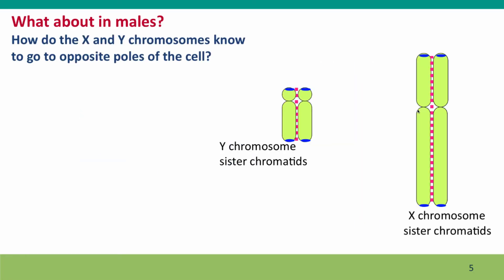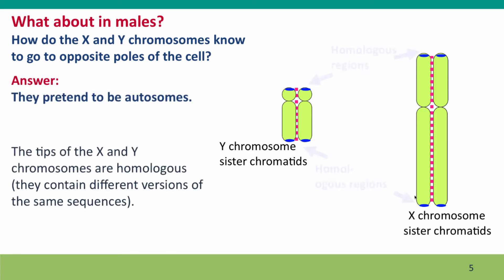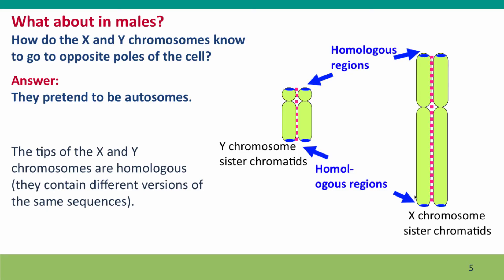But in males, the situation is different. The X and Y chromosomes are very different chromosomes, even very different lengths. So how do they know to go to opposite poles of the cell? The autosomes solve this by pairing and then having the pair pulled apart by the spindle fibers. What do the X and Y chromosomes do? Well, they pretend to be autosomes. And they do this by having at their ends sequences that are homologous between the X and the Y.